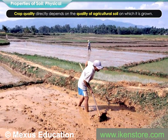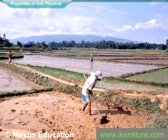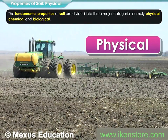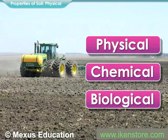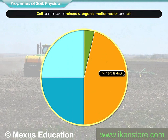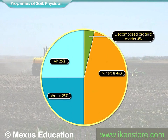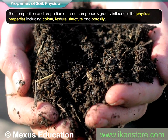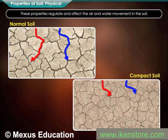Crop quality directly depends on the quality of agricultural soil on which it is grown. The fundamental properties of soil are divided into three major categories: physical, chemical, and biological. Soil comprises minerals, organic matter, water, and air. The composition and proportion of these components greatly influences the physical properties, including color, texture, structure, and porosity. These properties regulate and affect the air and water movement in the soil.